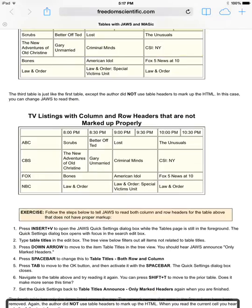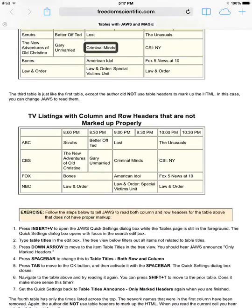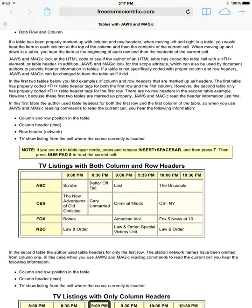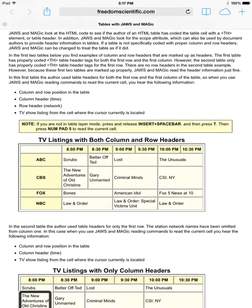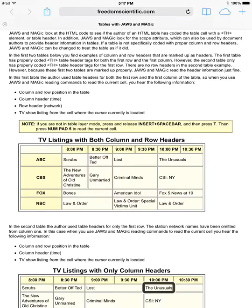Moving to the next table, this one has no blank cells and only column headers — but it gets the column header correct every time we swipe: 8:30 p.m., Gary Unmarried; 9:00 p.m., Criminal Minds; 10:00 p.m., CSI NY. That is correct. There is no row header, so we don't hear one announced.